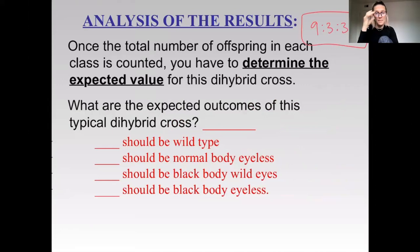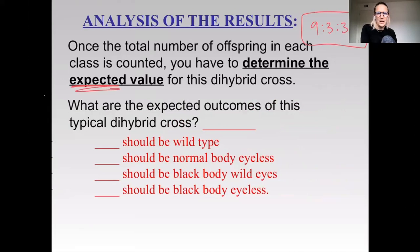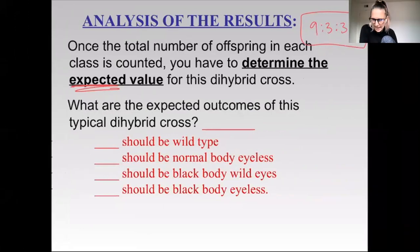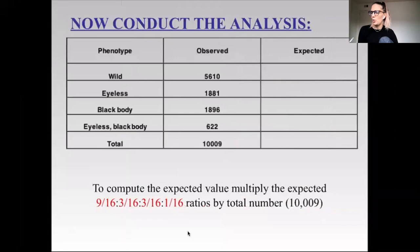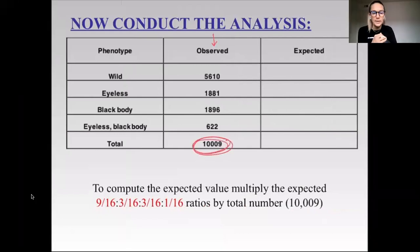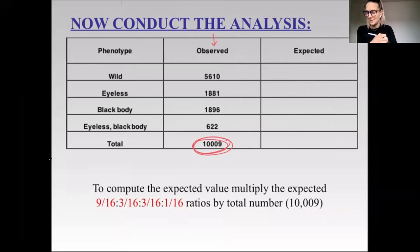Once you have the observed values, you need to determine what the expected values are. What are the expected values for this typical dihybrid cross? I like to make a little chart — I think that's the easiest. We're going to look at our observed numbers. What's really important is that you have the total, because then you can calculate the expected values.